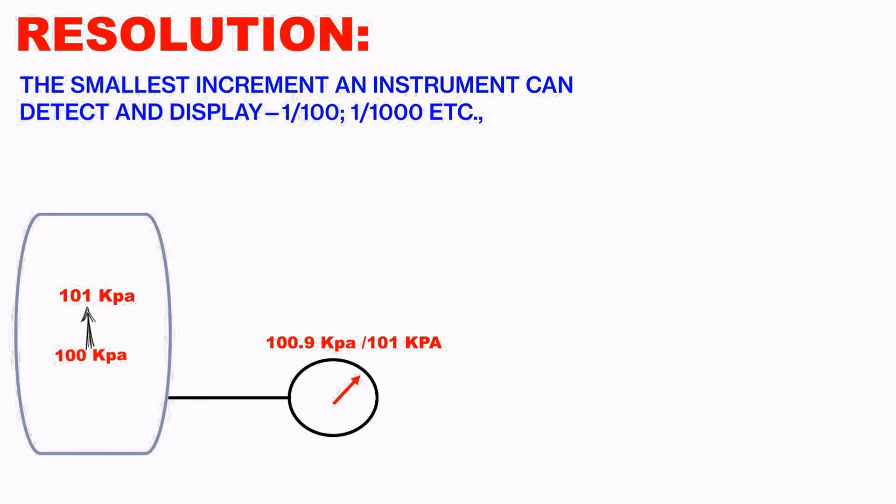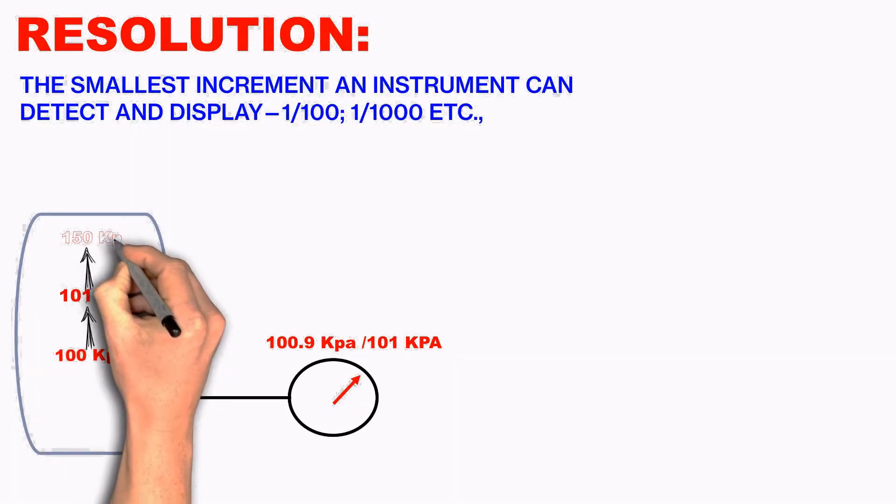So now the pressure measures 100.1 kPa or 101 kPa or 100.09 kPa. Then this is the resolution. The smallest increment an instrument can detect and display. This is called the resolution.